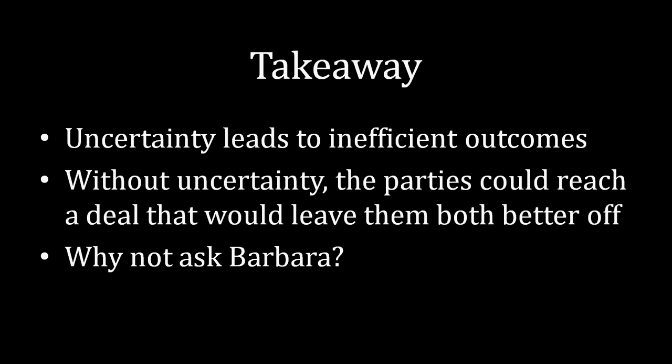One thing you might be wondering is: if uncertainty is the root of this evil, if uncertainty is causing inefficiency, why don't Albert and Barbara figure out a way to resolve this problem? Why don't they just talk to each other? Why doesn't Albert just ask Barbara whether she is the strong type or the weak type and then tailor the offer accordingly based on Barbara's answer? What we're going to be looking at in the next lecture is something called asymmetric information — which we've seen before — and incentives to misrepresent. This incentive to misrepresent is actually going to cause bargaining to break down, just like it currently does, and why Albert will not be able to effectively ask Barbara what her type is.